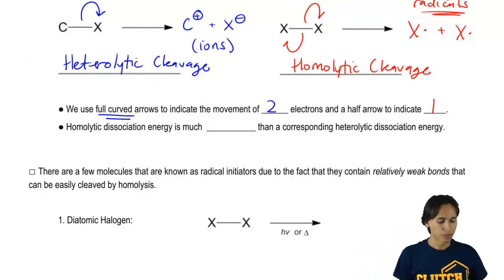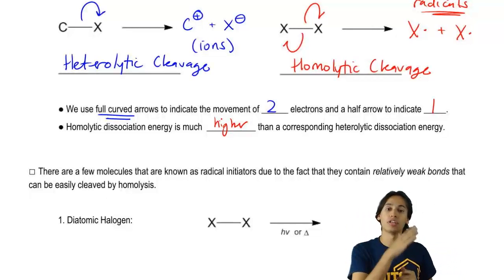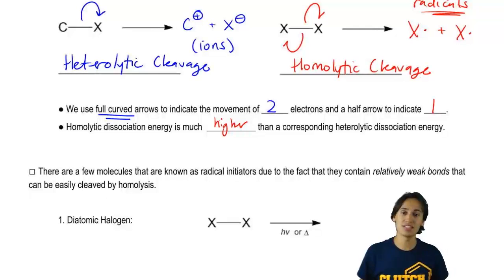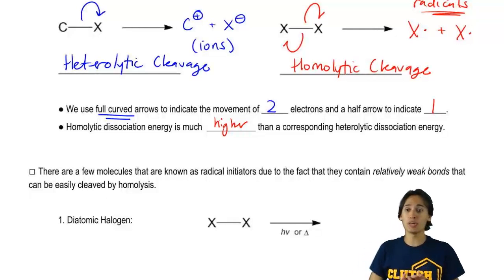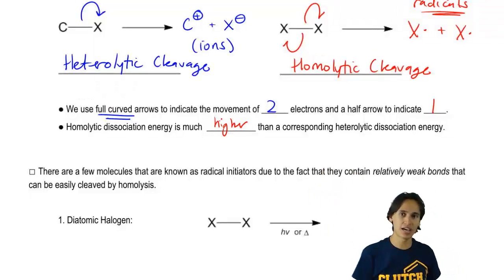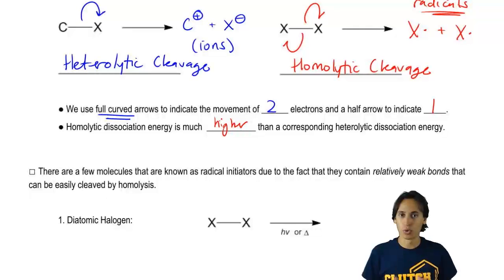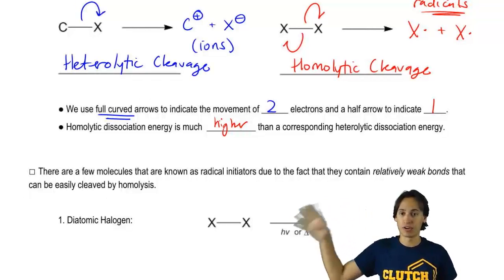So it turns out that homolytic dissociation energy is typically higher than corresponding heterolytic dissociation energy. So what that means is that most of the time when we're breaking bonds in organic chemistry, we're actually going to be using the blue method, the one that's heterolytic. Whether you get into other types of reactions or just later on in the course, you're going to see that we're going to use a lot of heterolytic cleavage.